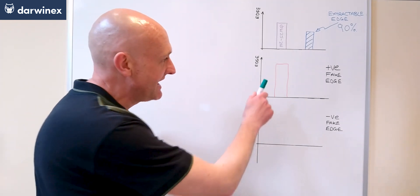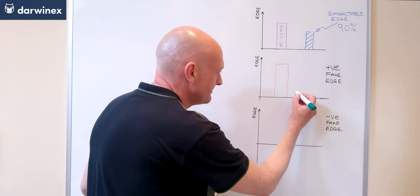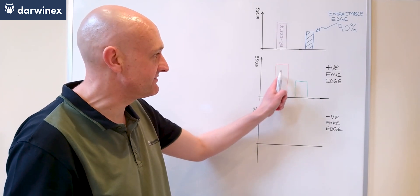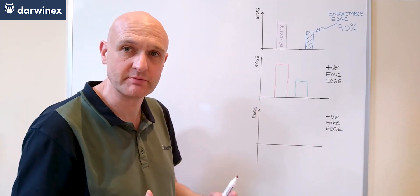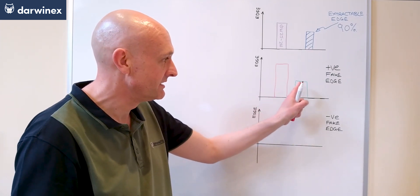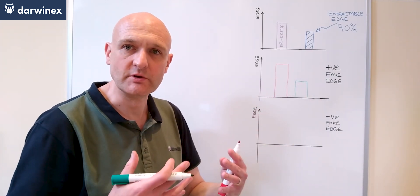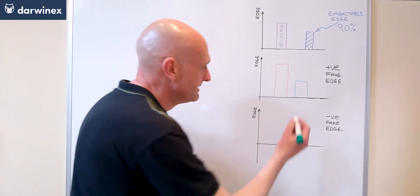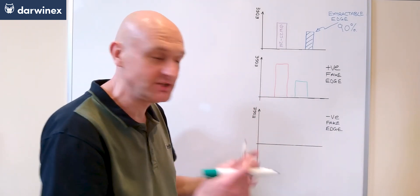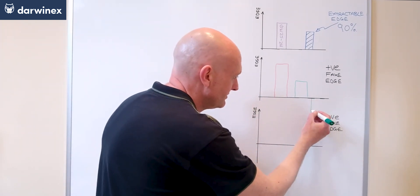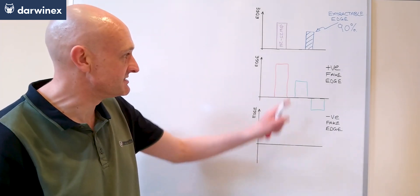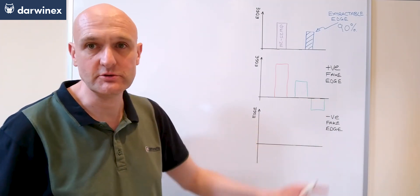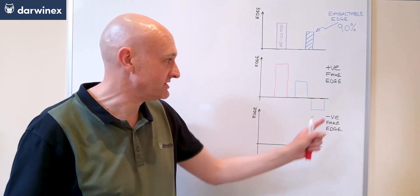Now the genuine edge of this same parameter set might actually be much lower, and when that's the case, if these were the best performing parameter set in the optimization we would trade them, and this is the actual edge we would get from that system in our live account. Worse than that is when this parameter set has a genuine edge that is negative, and what this means is that we've chosen it based on this good performance, but when we trade it live it loses money because the genuine edge is negative.